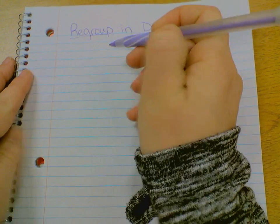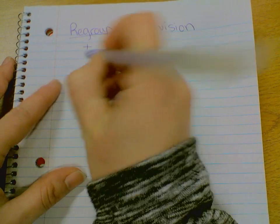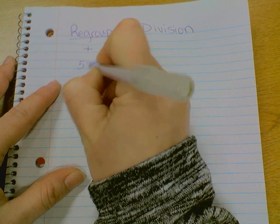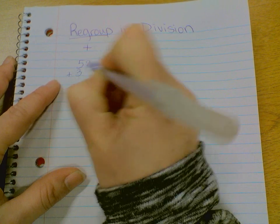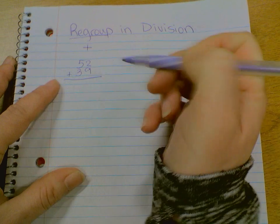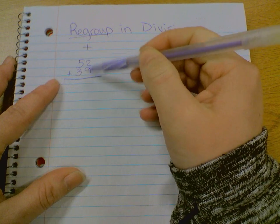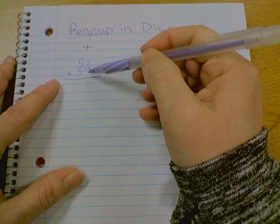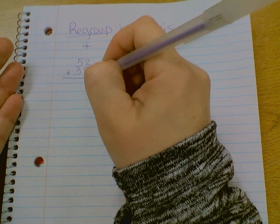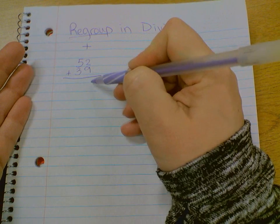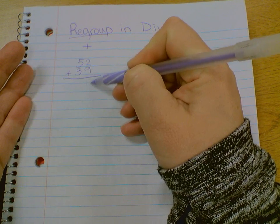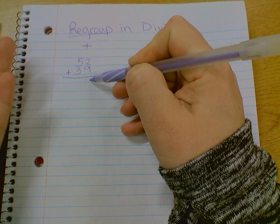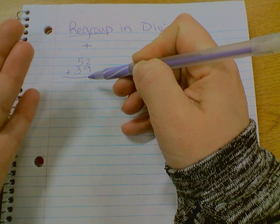Regrouping when it comes to addition is when you have, like, let's say a problem like 52 plus 39. You solve starting at the ones place, right? Two plus nine. You know that two plus nine equals 11. You can't place 11 down here in the ones place. So you have to take it to the next section.